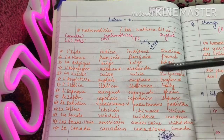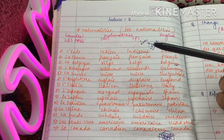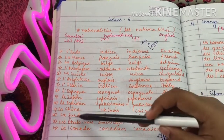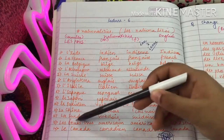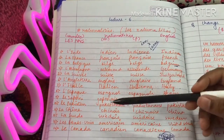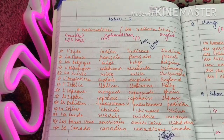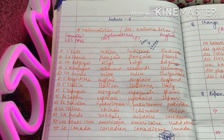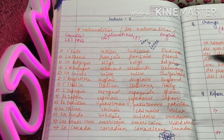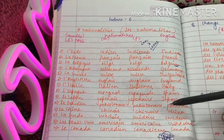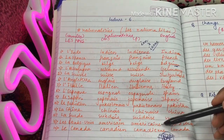'Les États-Unis' means United States. The nationality is 'Américain', and for the feminine form we add an E — 'Américaine'.